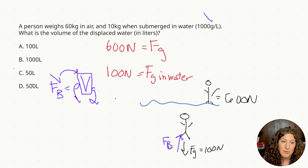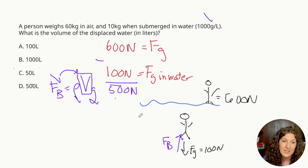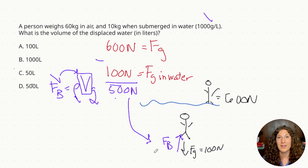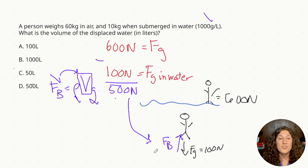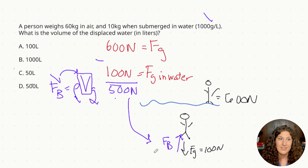If we think about that setup: the buoyant force has to be pushing up the same amount of weight that was apparently lost. So we subtract the weight in air minus the weight in water: 600 newtons minus 100 newtons equals 500 newtons. That's our buoyant force — it's the amount the buoyant force took away from the gravitational force when this person was submerged in water. There's no single formula for this, but it makes sense from an application standpoint: the weight lost had to go somewhere, and in hydrostatics that force is the buoyant force.